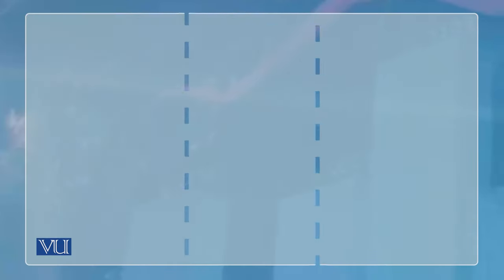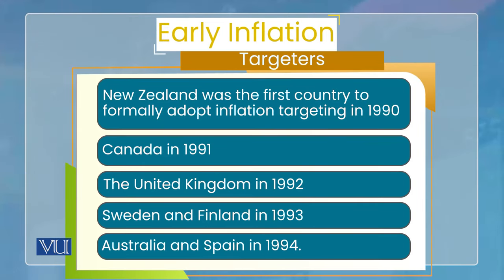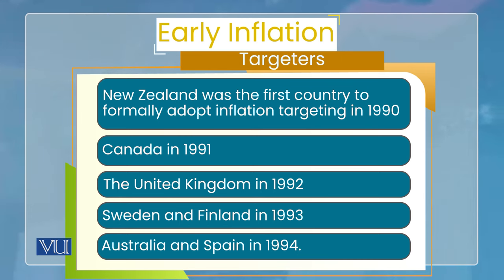اب جن central banks نے inflation targeting strategy start کی ان کا ذکر ضروری ہے۔ سب سے پہلے New Zealand نے کیا — یہ first country تھا which formally adopted inflation targeting regime in 1990۔ پھر Canada نے 1991 میں، UK نے 1992 میں، Sweden اور Finland نے 1993 میں، اور Australia اور Spain نے 1994 میں یہ strategy adopt کی۔ یہ early examples تھے — آج بہت سارے ممالک inflation targeting strategy adopt کر چکے ہیں۔